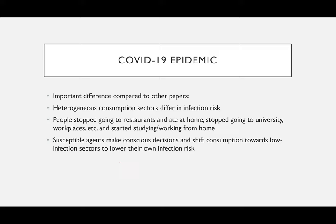There are a few differences compared to other papers coming out at the time. There are heterogeneous consumption sectors that differ in infection risk. The idea is that people stop going to restaurants and instead started eating at home; they stopped going to university or workplaces and started studying and working from home. So susceptible agents made conscious decisions and shifted their consumption to the low infection sector, which is basically home, and in this way lowered their own infection risk.